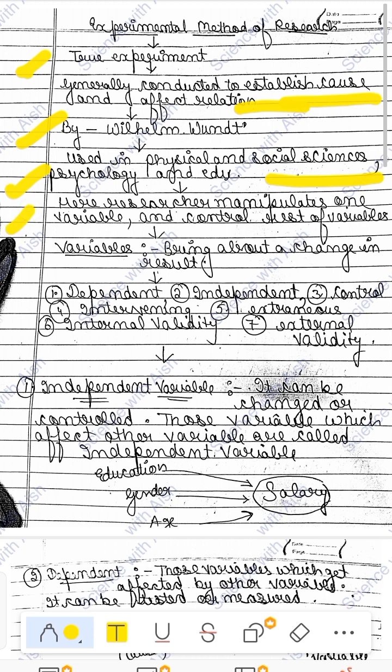Here the researcher manipulates one variable and controls the rest of the variables. They manipulate and interpret to see what happens. If you change the independent variable, the dependent variable changes. This is how you change the variables in an experiment to get a result.